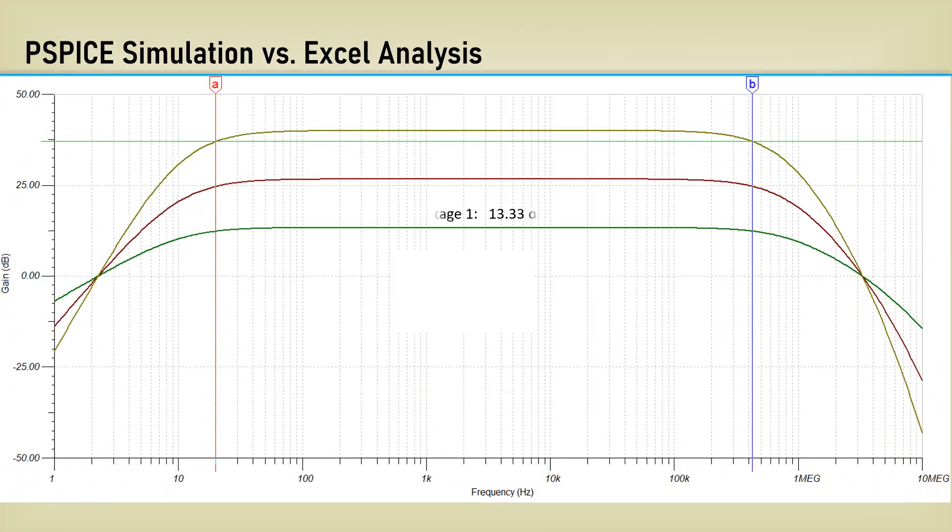Here are the simulation results. Stage 1 has 13 and a third dB of gain. The 3 dB corner, at 10 and a third dB, is set perfectly at 10.2 Hz. The upper corner of stage 1 is at the predicted 829 kHz.